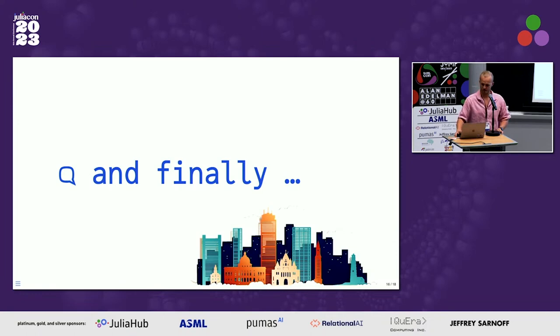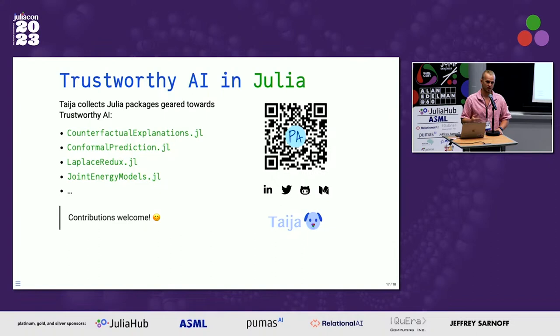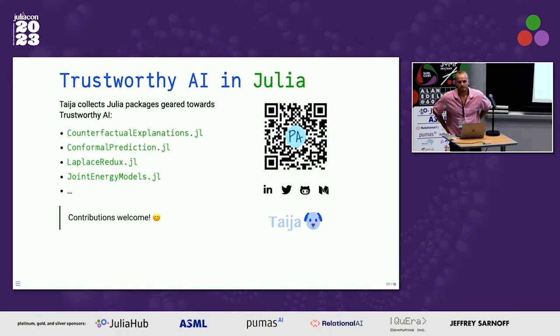I've been working since the beginning of my PhD on packages that broadly fall under trustworthy AI. I've started collecting them in a GitHub organization — a loosely defined home for trustworthy AI. If you have anything that fits this framework, feel free to contribute. I'm still quite new to Julia myself, so I'm always very open to contributions.